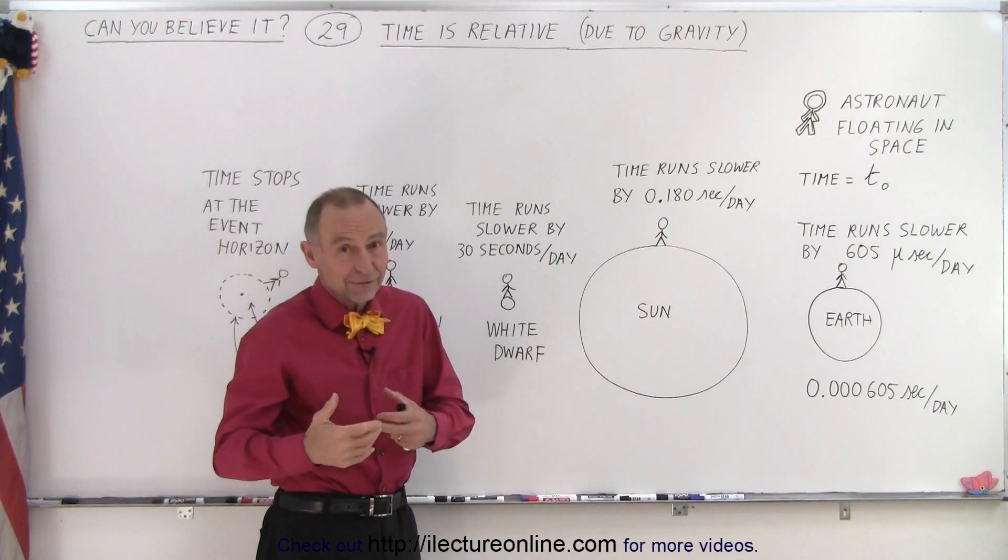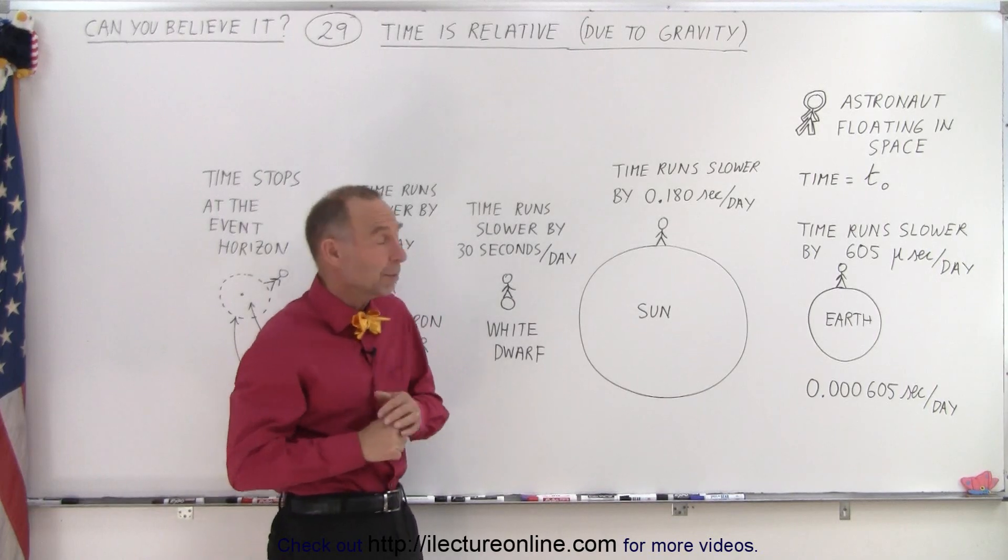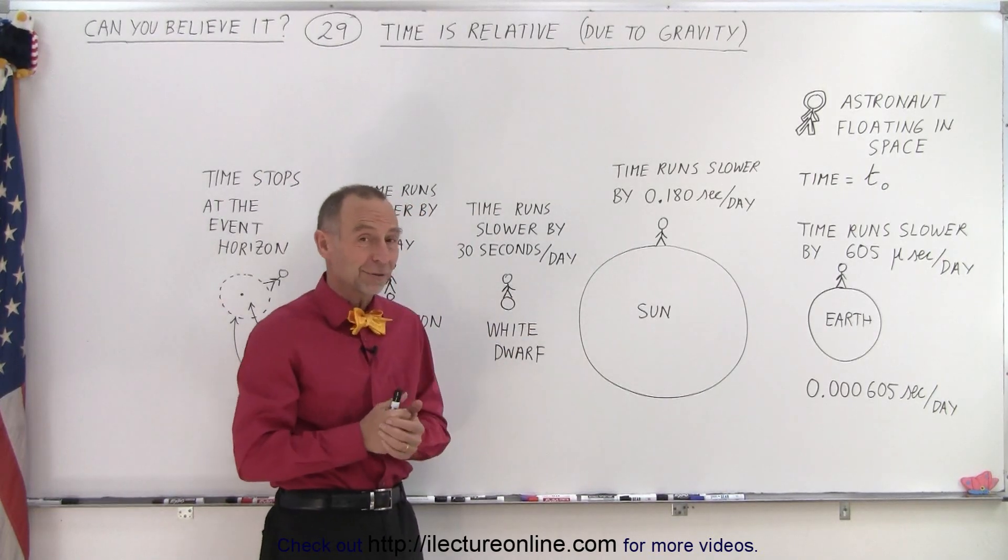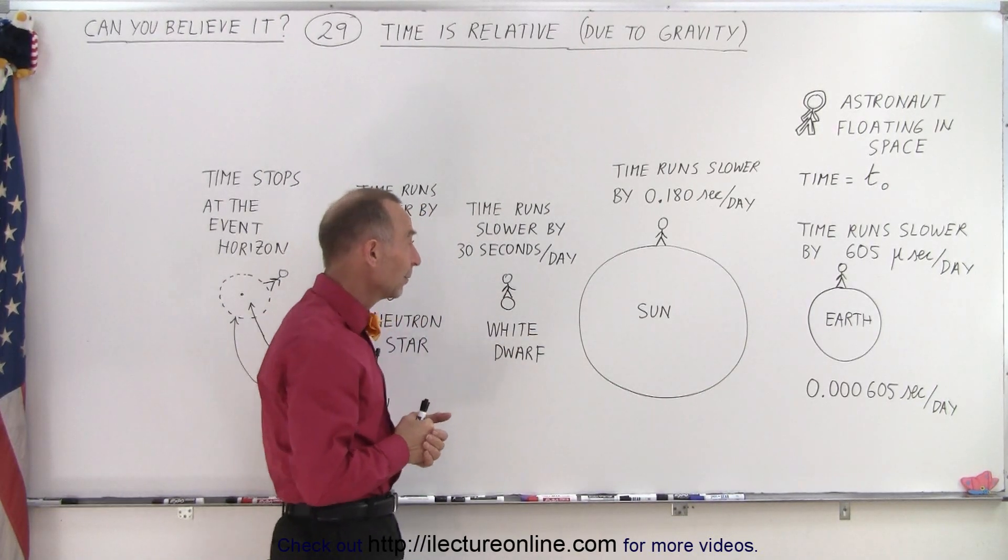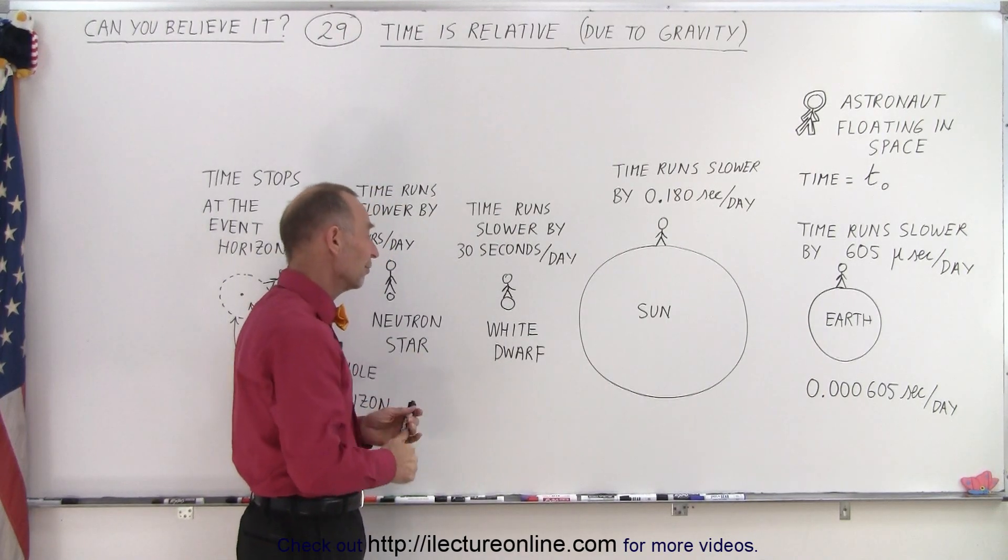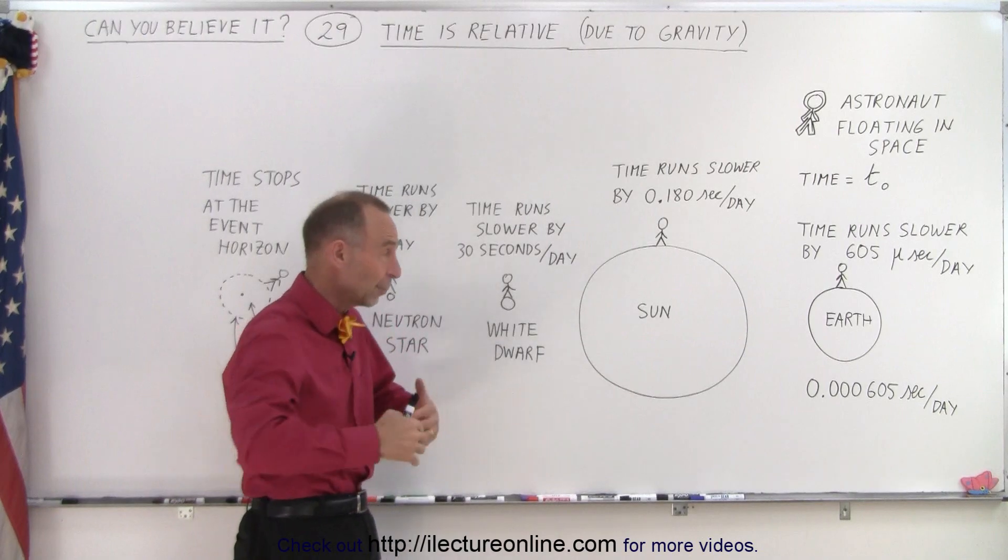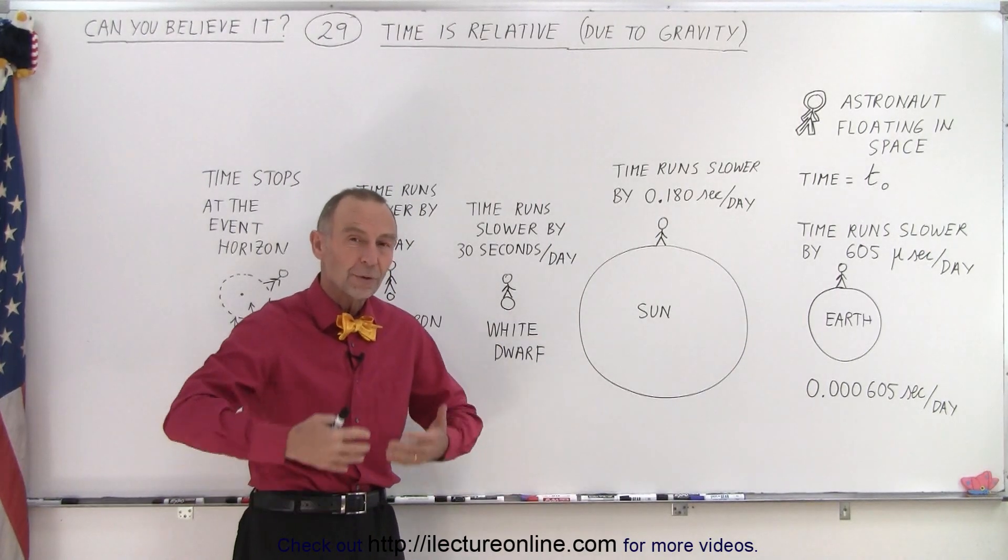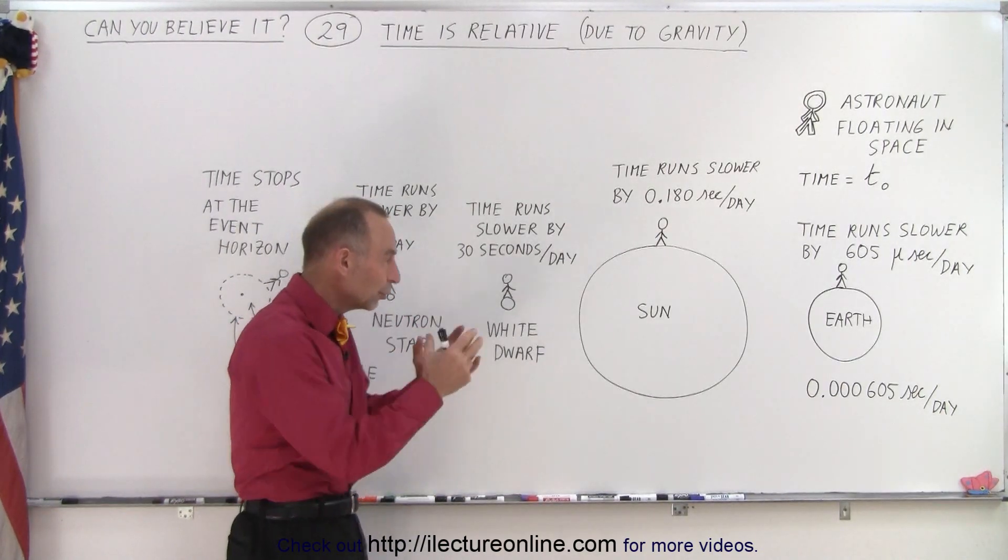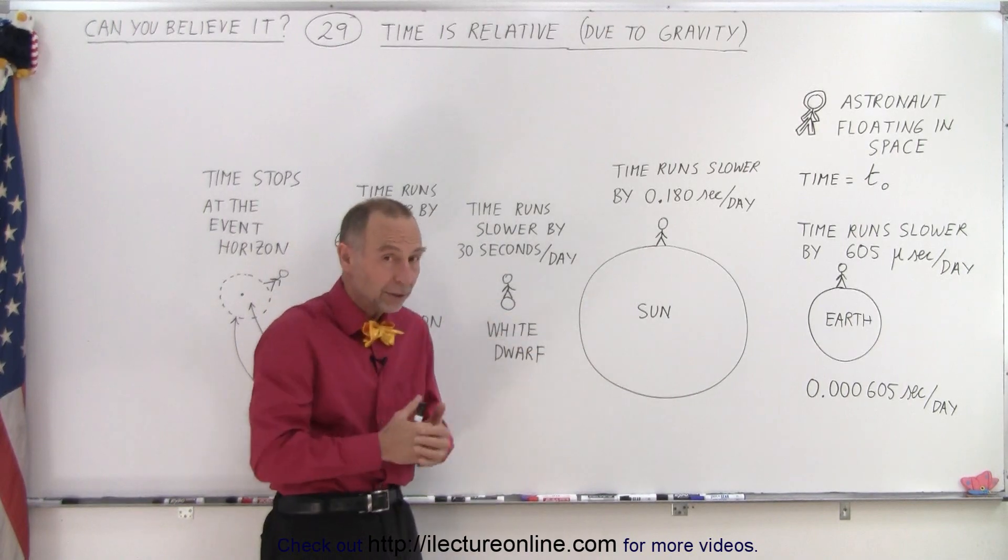Again, you might say that's not very much and can't even be measured. But yes, it would be able to be measured if you could stand on the surface of the Sun. Well, let's go to another place in the universe called the White Dwarf. Most stars in the universe, when they run past their normal progression of their life cycle, they will turn into a White Dwarf.